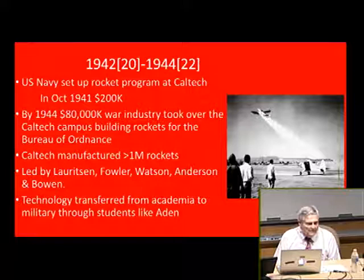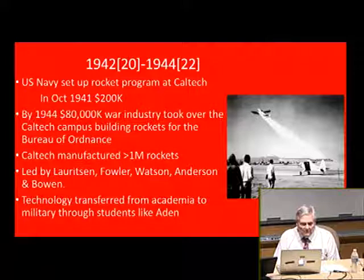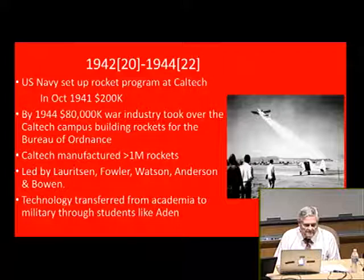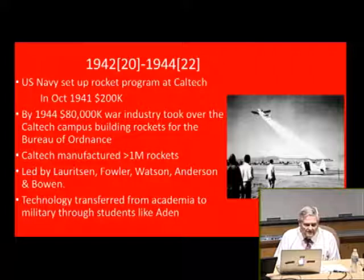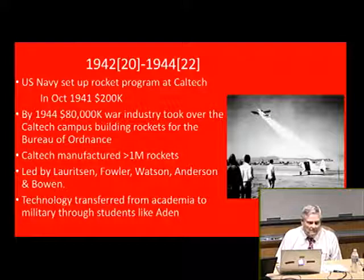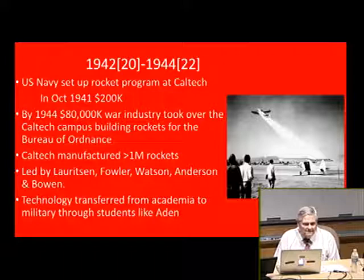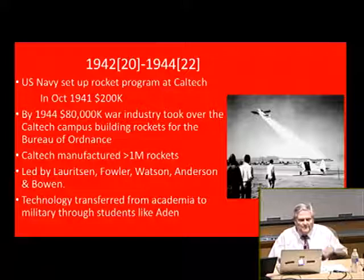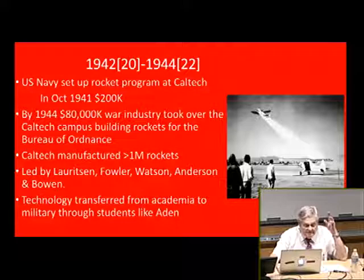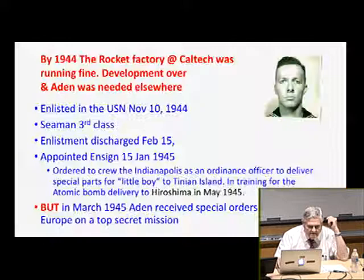From 1942 to 1944, the Navy set up a rocket program at Caltech. The Caltech trustees and scientists were looking for ways they could contribute; they had Theodore von Karman, a fluid dynamicist of international renown. By 1944, Caltech had an $80 million a year war industry that took over the campus building rockets for the Bureau of Ordnance. All told, Caltech built more than one million rockets during World War II. The whole effort was led by five physicists — Lawrenson, Fowler, Watson, Anderson, and Bowen. Fowler won the Nobel Prize for his understanding of how elements are created in the universe. The technology was transferred from academia to military and industry through students like Aidan.